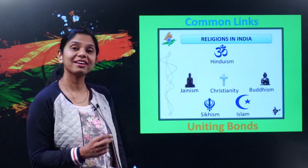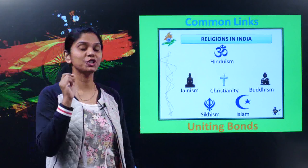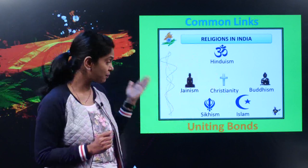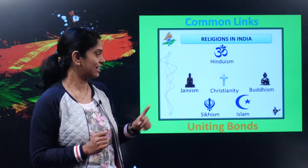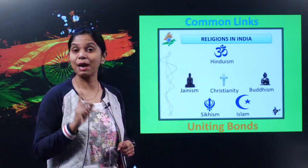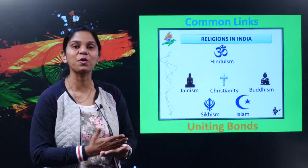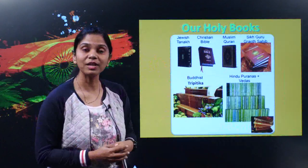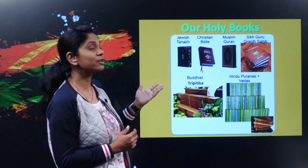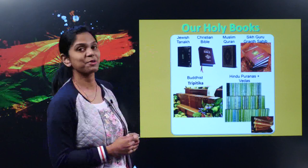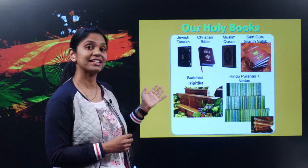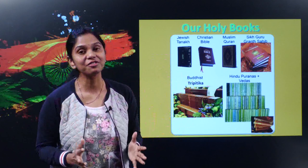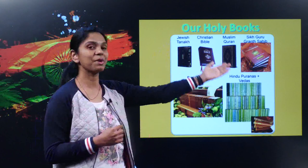Now let's come to the uniting bonds. Though there are different religions in India — Hinduism, Buddhism, Christianity, Jainism, Sikhism, Islam, Judaism, Zoroastrianism — yet they are our uniting bonds. Religion pulls us together. All religions in India can co-exist and develop brotherhood. Each religion has a holy book: the Jewish Tanakh, the Christian Bible, the Muslim Quran, the Sikh Guru Granth Sahib, the Buddhist Tripitaka, and the Hindu Puranas. All these holy books preach one and the same thing: love your neighbor the way you love yourself — and a neighbor could be from any of these religions.